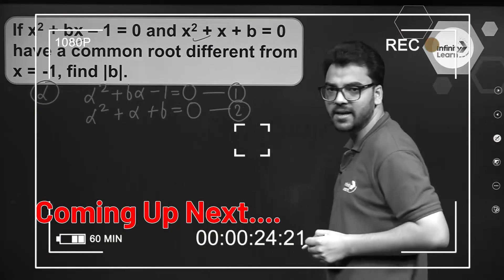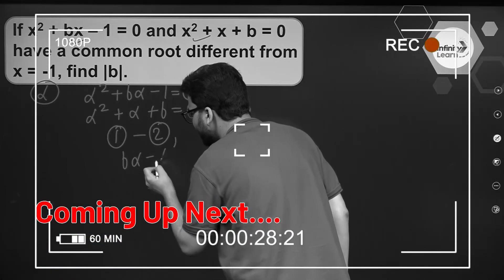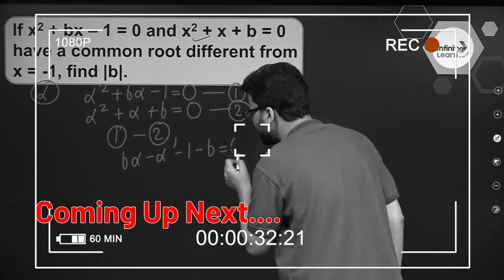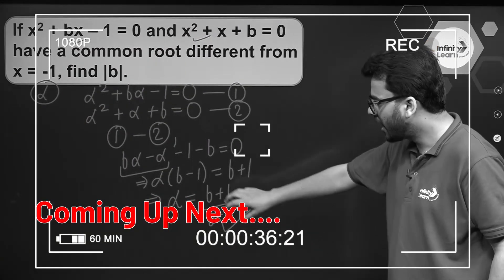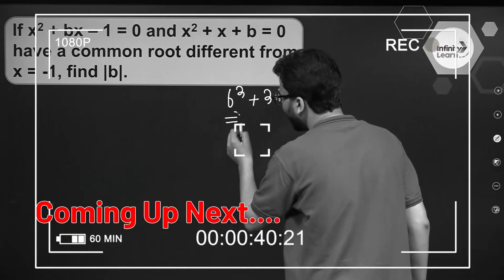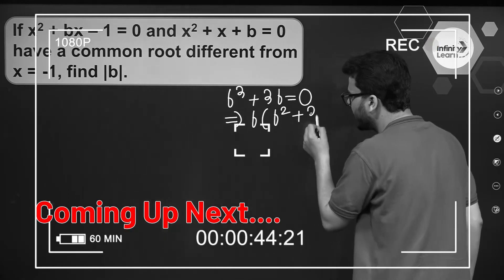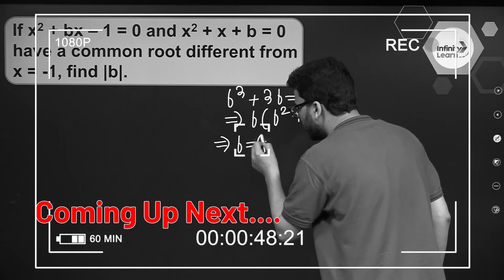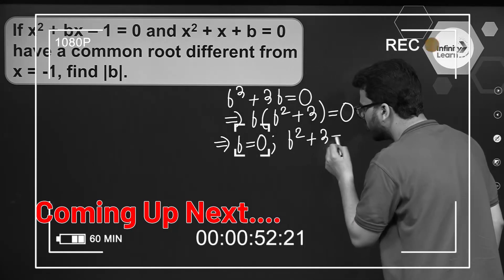Can I subtract the second equation from the first equation? We get: b·alpha - alpha - 1 - b = 0. Taking b as common, we get b(alpha - 1) - (alpha + 1) = 0, leaving b² + 3 = 0 after further steps.